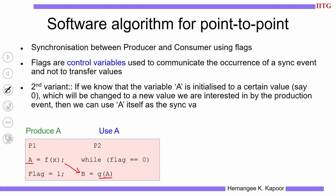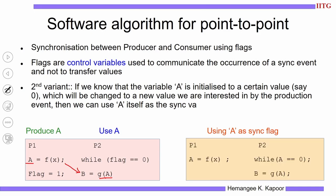We can modify this program slightly. Given that A was initially 0 in both P1 and P2, and P1 is going to generate a non-zero value for A, P2 can simply spin on A. So A can serve as both the synchronization flag variable and the data variable, provided A equals 0 to begin with. P2 will wait for A's value to become non-zero and then consume it. This is a very simple software algorithm for establishing point-to-point synchronization.